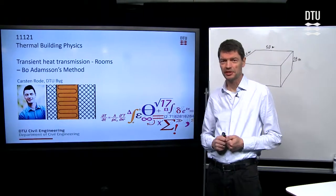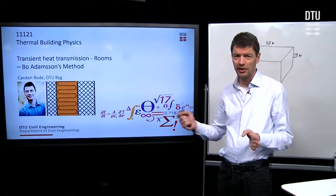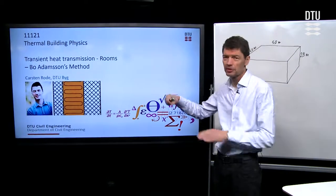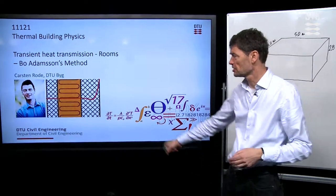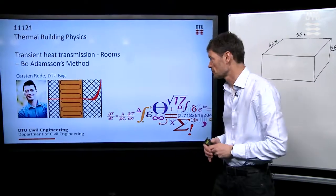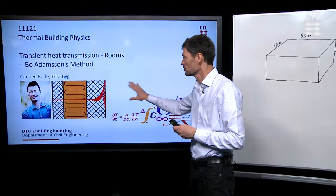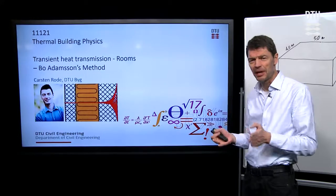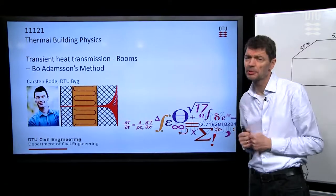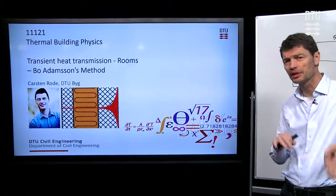Welcome to this lecture on transient heat transmission, the second part, where we talk about transient conditions for rooms. Before we talked about conditions for walls, now we're talking about conditions for rooms that are adjacent to the walls, because the walls give some thermal capacity to the rooms, and possibly other objects in the rooms.